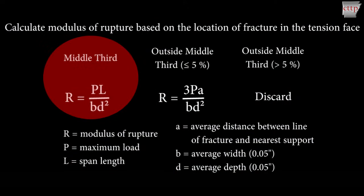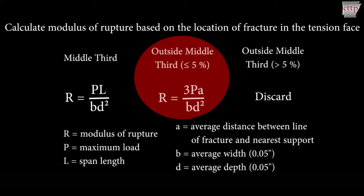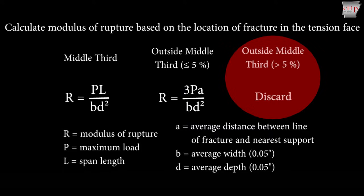Calculate the modulus of rupture based on the location of the fracture on the tension phase. If the fracture occurred outside the middle third by more than 5%, discard the test results.